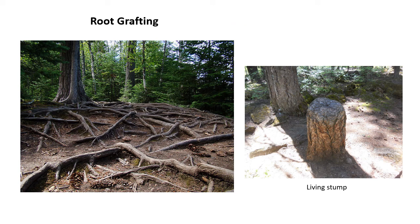Another interesting thing about roots is root grafting — the union of cambium layers between two roots. This can occur between two roots of the same tree, or even between roots of different trees, and it happens a lot in stands of the same species, though it has been documented between different species as well. Over here on the right you can see a living stump — a tree that was cut down with bark grown over the top and living cambium tissue underneath. How does this stump stay alive without leaves to do photosynthesis? Its roots are grafted to nearby trees, which provide photosynthate to the cambium, while the stump's roots can provide water and soil nutrients to those living trees.